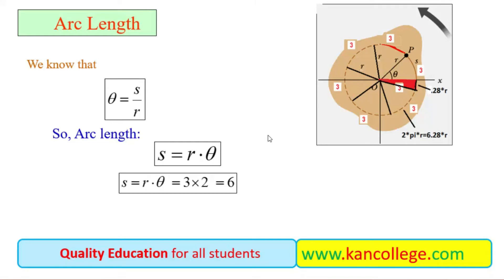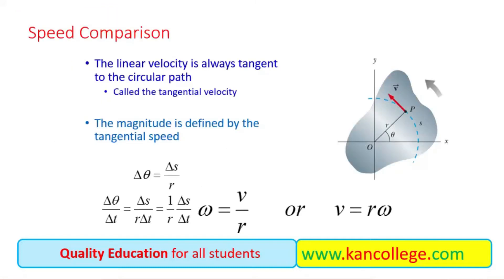You can see from this example that if the angle is 2 radians — 1 radian in this arc and 1 radian in the other arc — then the arc length will be 3 and 3, giving 6. So theta is the ratio of arc length to the radius.